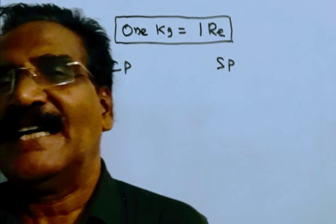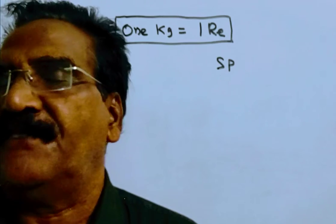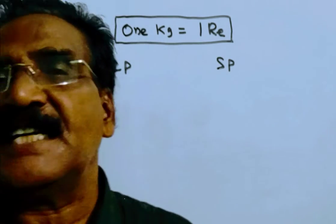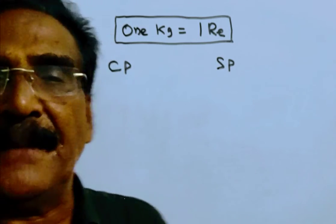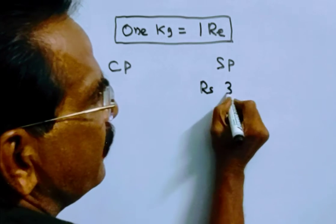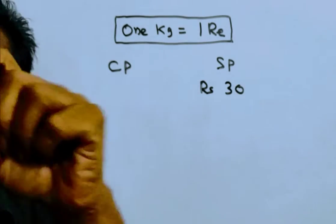Hi friends, good morning. Please look at the next problem in profit and loss. The problem is given in the description box. A dishonest shopkeeper sells mangoes at rupees 30 which are bought at rupees 20.